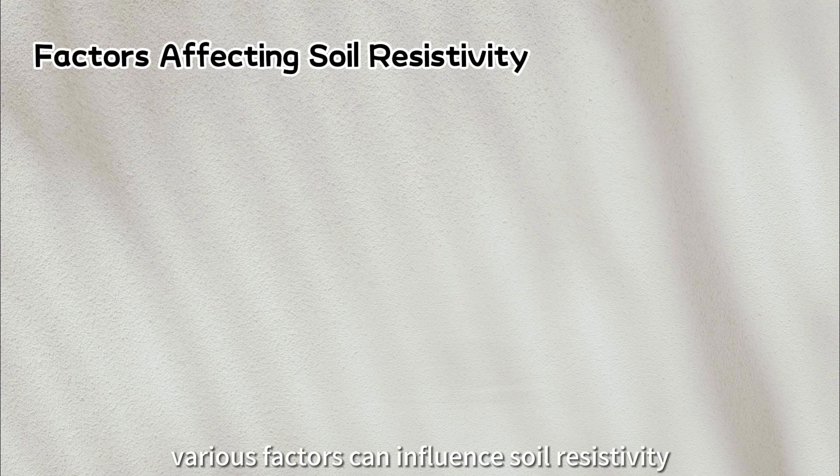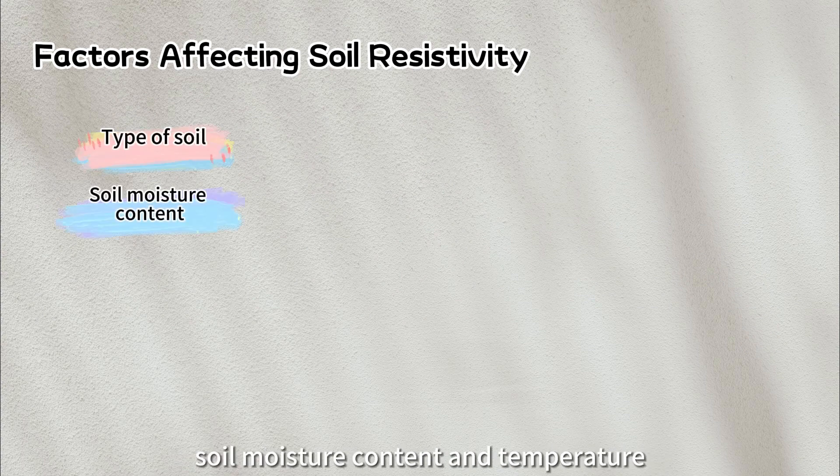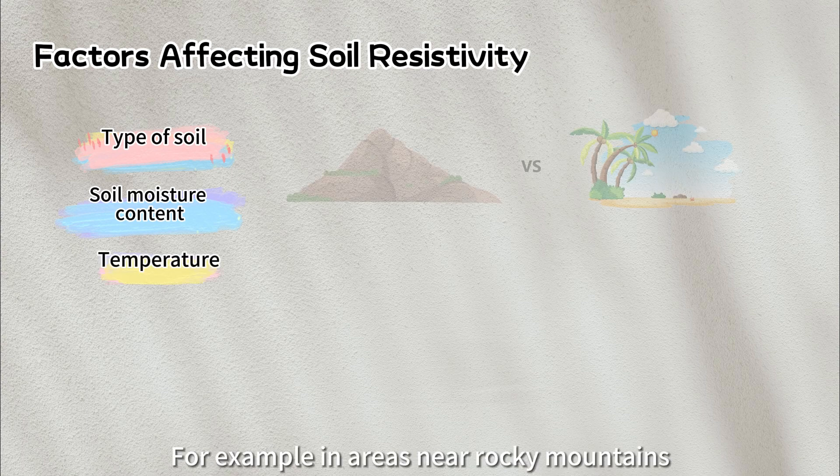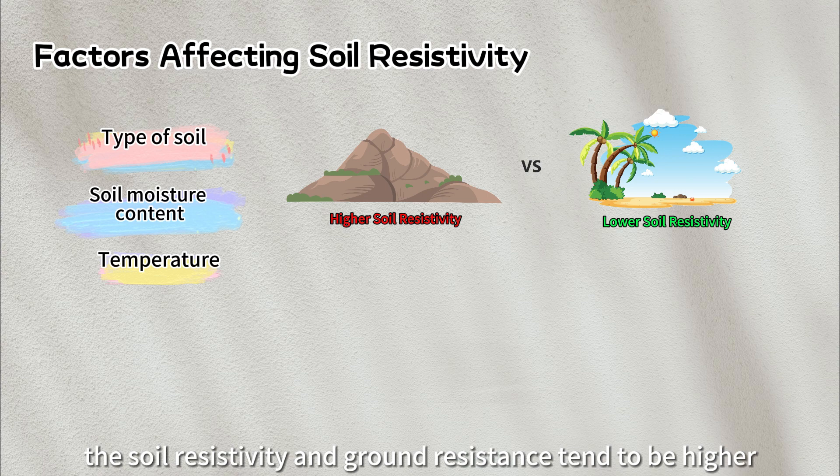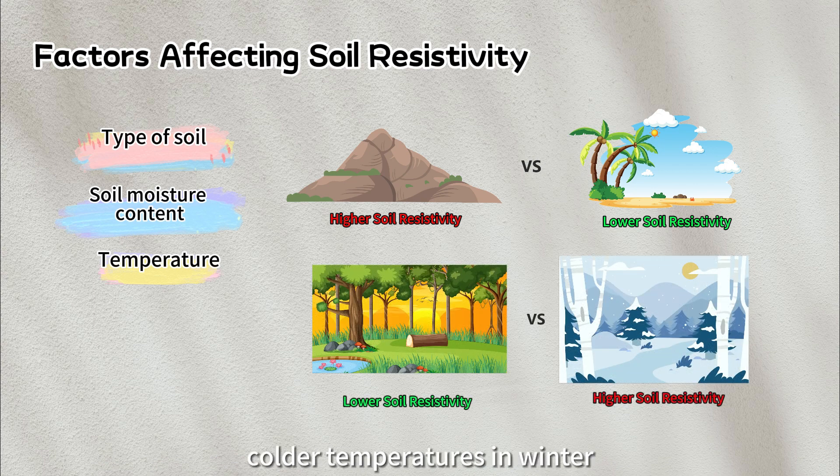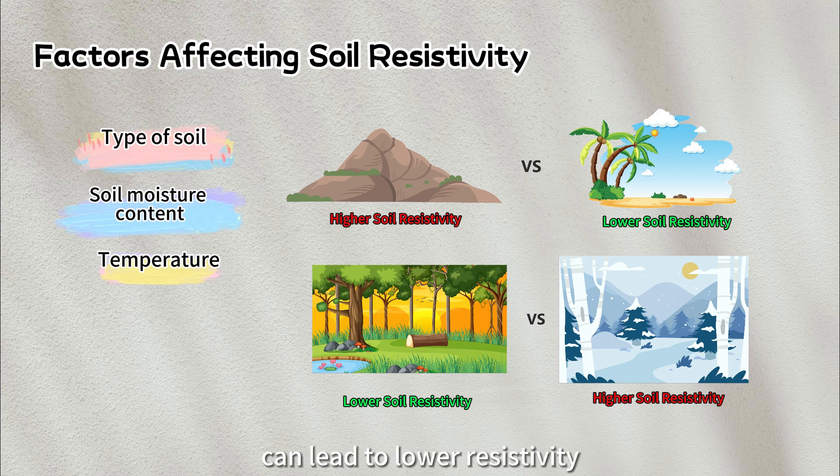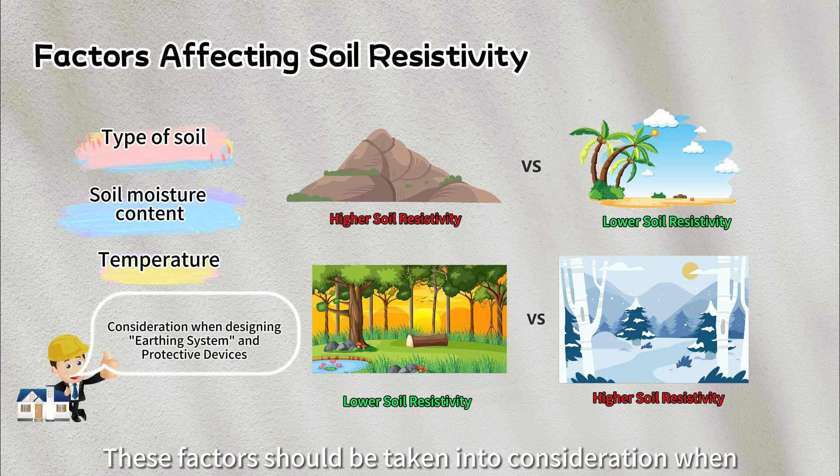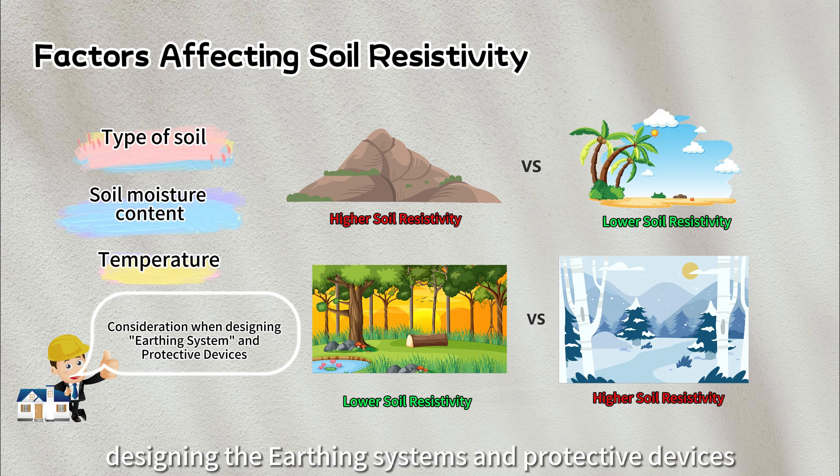Certainly, various factors can influence soil resistivity, including the type of soil, soil moisture content, and temperature. For example, in areas near Rocky Mountains, the soil resistivity and ground resistance tend to be higher compared to areas closer to the sea. Besides, in some countries, colder temperatures in winter tend to increase soil resistivity, while warmer temperatures in summer can lead to lower resistivity. These factors should be taken into consideration when designing the earthing systems and protective devices.